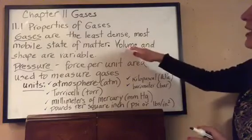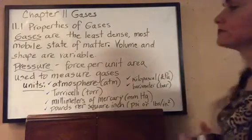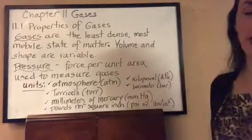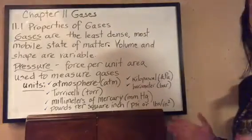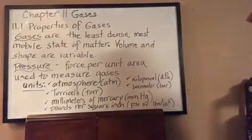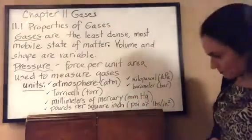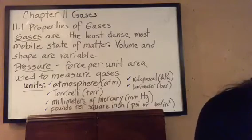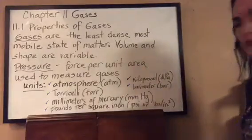So how can we measure something that is so mobile? Pressure — pressure is a force per unit area, and this is how gases are measured. There are various units for pressure. Atmosphere is the SI unit. Torricelli, torr, and millimeters of mercury (mmHg) are also used — mercury has the symbol Hg from the Latin name hydrargyrum, also nicknamed 'quicksilver' because it's liquid silver, like silver water.